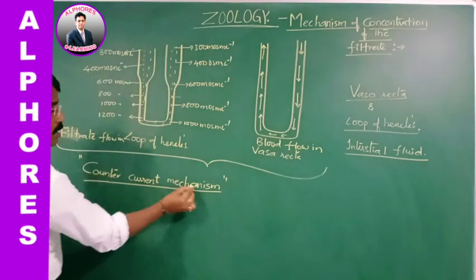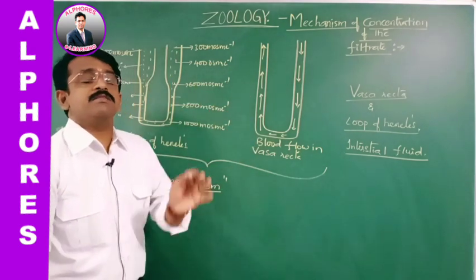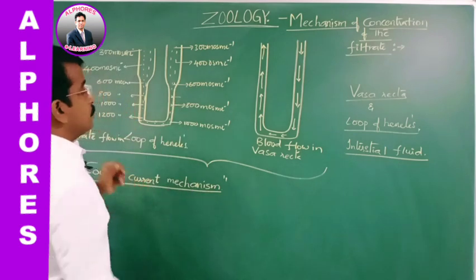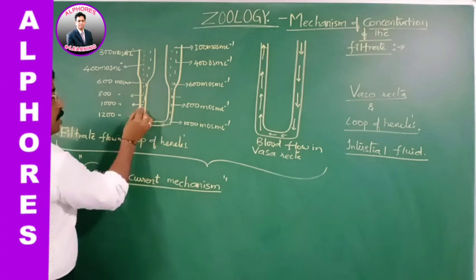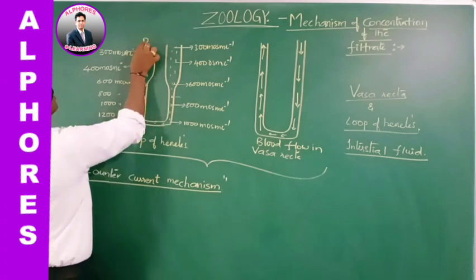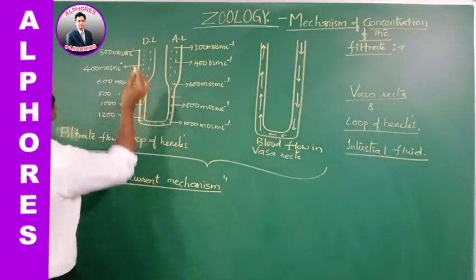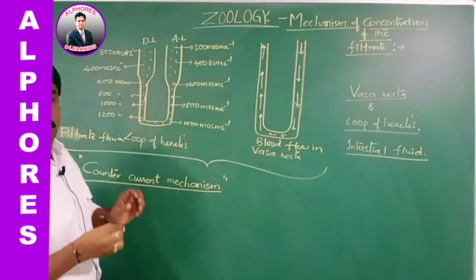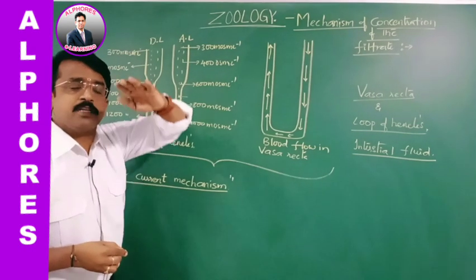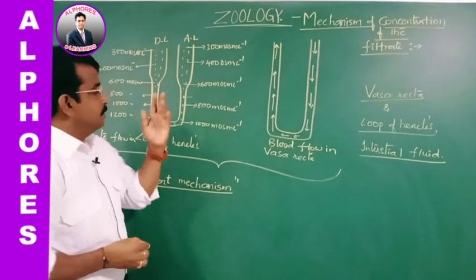This is mainly by counter-current mechanism. Counter-current means opposite flow. The loop of Henle has two limbs including the descending limb and the ascending limb. The descending limb is the one in which the primary urine or filtrate flows from outer medulla to inner medulla. PCT and DCT are present in the cortex, and the loop of Henle and collecting duct are in the medulla.